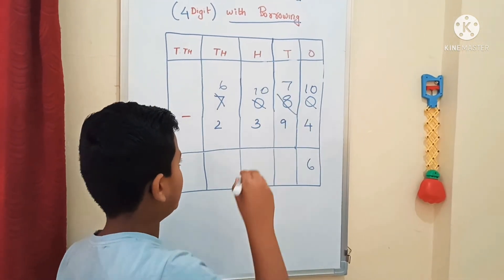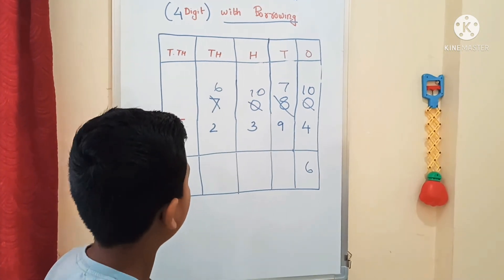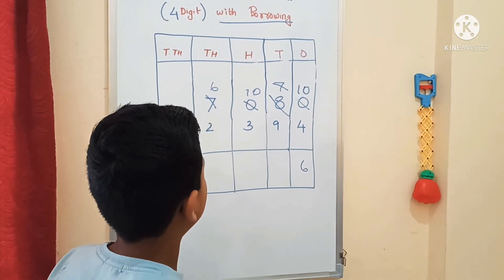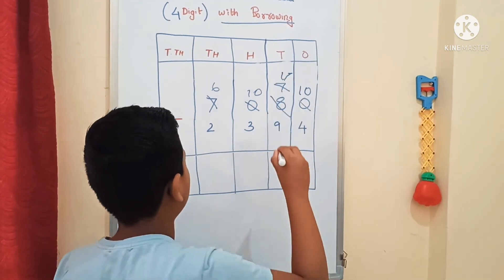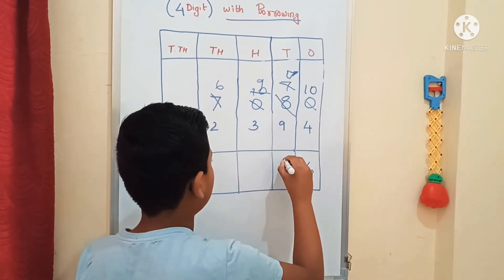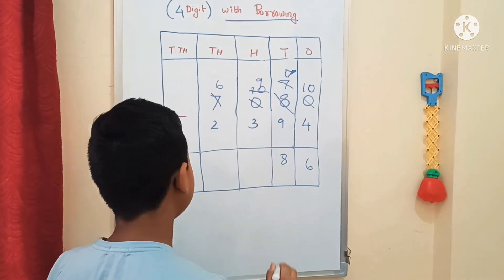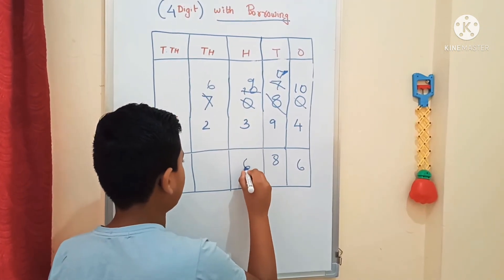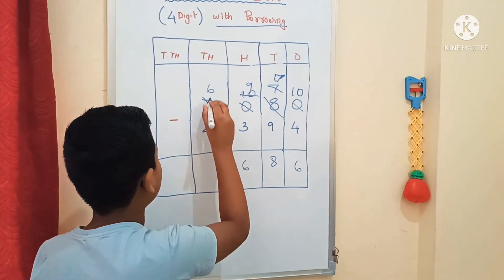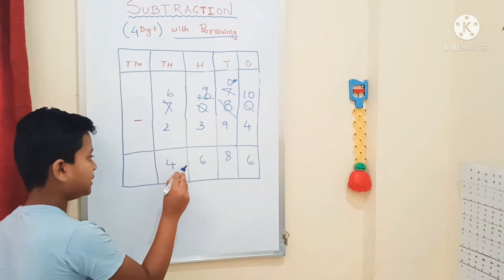We start again with the 10th place: we cannot subtract 9 from 7. We go to the 100th place, where we have 10. We can borrow. After borrowing 10 tenths, this 7 is 17, and this 10 is now 9. 17 minus 9 is equal to 8. We go to the 100th place: we have 9, and 9 minus 3 is equal to 6. We go to the 1000th place: we can subtract 2 from 6, so 6 minus 2 is equal to 4. Our answer is 4,686.